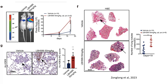Together, these results demonstrate that LBH589 enhances metastatic progression in breast cancer by increasing metastatic lung nodules and transcriptionally active chromatin, as shown by acetylated H3K9 staining. This highlights the potential risk of HDAC inhibitors in promoting cancer metastasis.